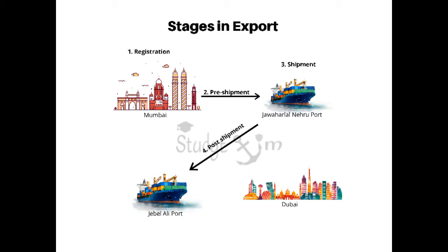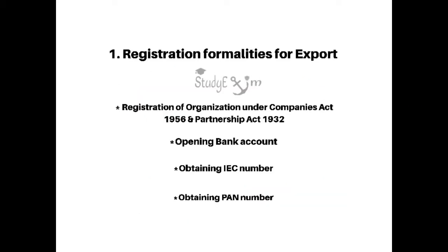First, registration formalities for export. It includes registration of organization under the Companies Act 1956 and Partnership Act 1932. The second step is opening a bank account. Then you have to obtain an IEC number and you have to also obtain a PAN number.